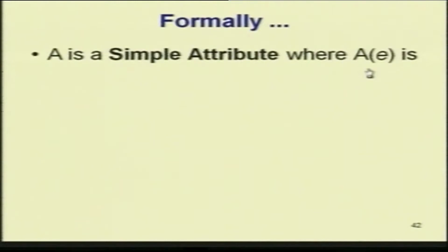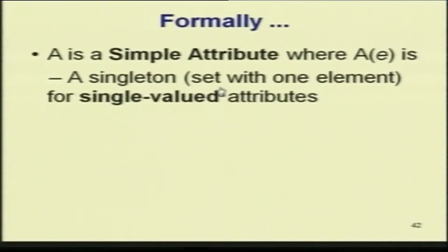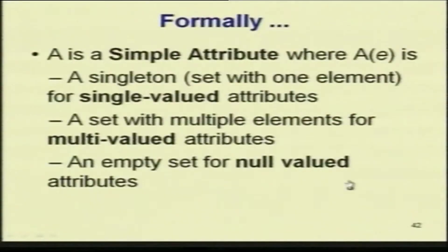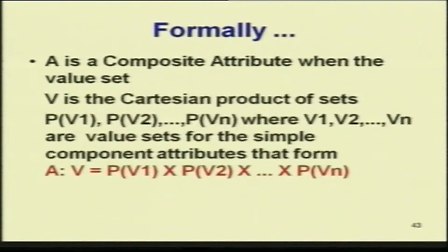A is a simple attribute where A(e) is a single term — it can have only one value. If you say degree and you have two or three values, then it is no more an atomic value. A set with multiple elements represents multivalued attributes. If you have multivalued attributes you have to split them up. An empty set represents null valued attributes. A is a composite attribute when the value set is the Cartesian product of all the sub or component attributes.